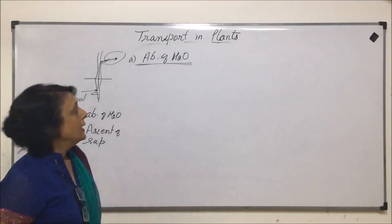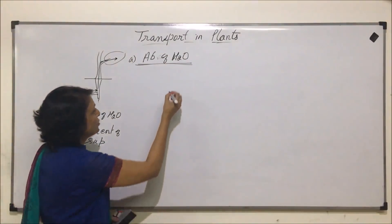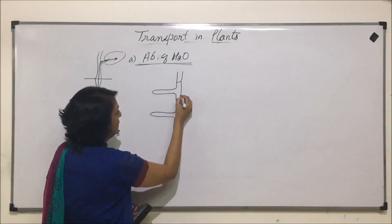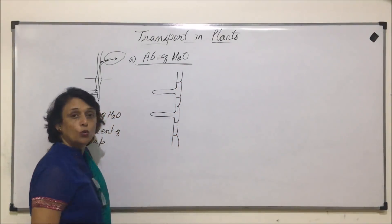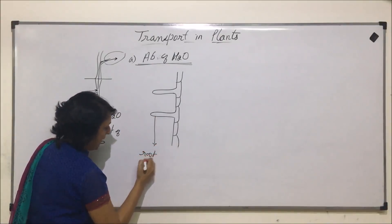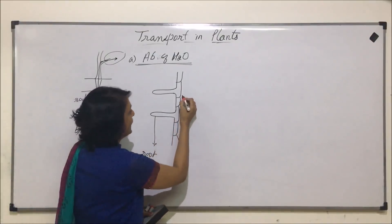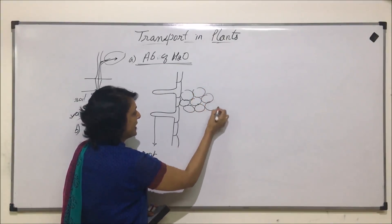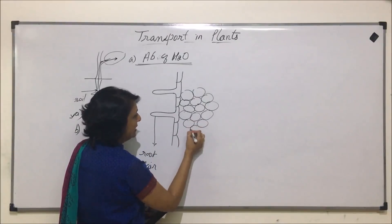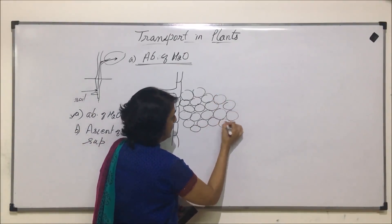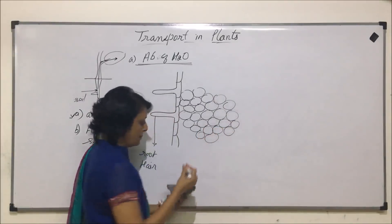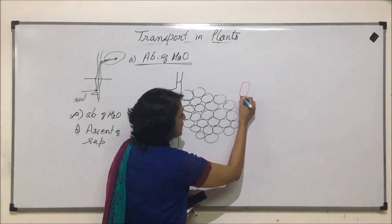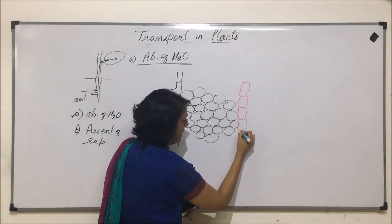Absorption of water through root hair is our step number one. Let us first see a simple diagram so that we are able to understand how this water is going to move in. These are the root hair — we are drawing the epidermal cells of the root. Then there are cortical cells, which are parenchymatous cells loosely arranged, and in between them there are intercellular spaces. These spaces, cell walls, and all these structures are going to help us in understanding this process.